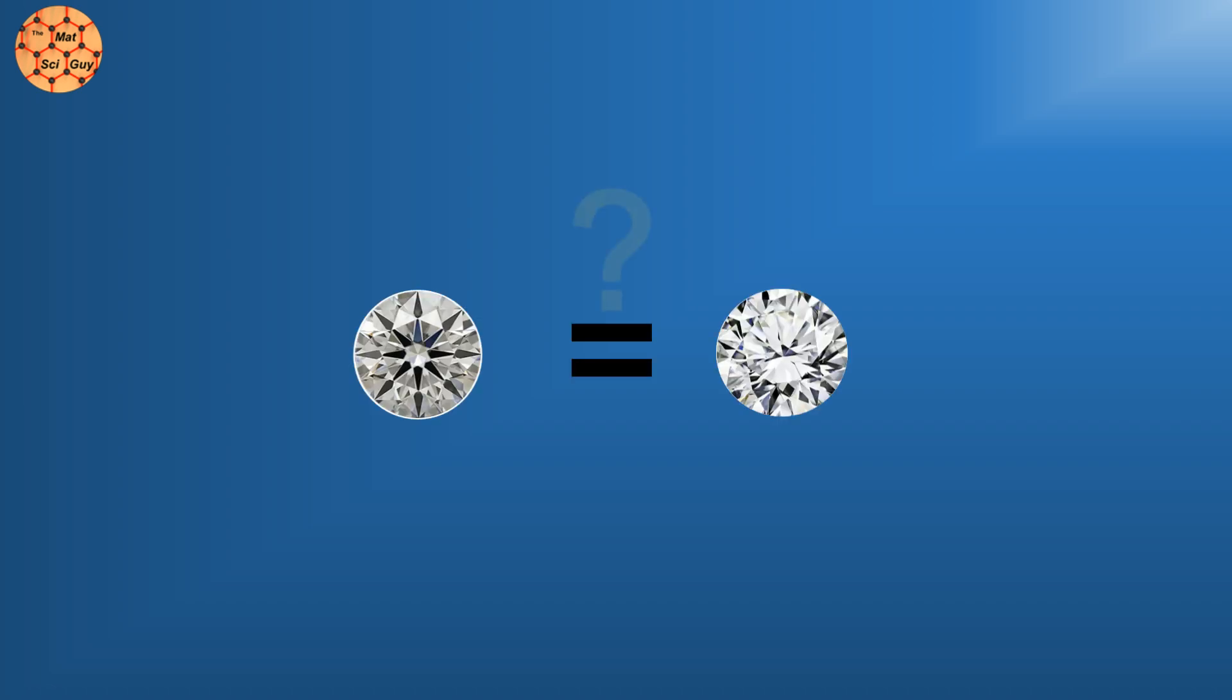So, now that we know how it's made, we can move on to the more interesting question. What exactly makes cubic zirconia look like diamond? Both are transparent and typically colorless, so the answer lies in what's known as the refractive index.